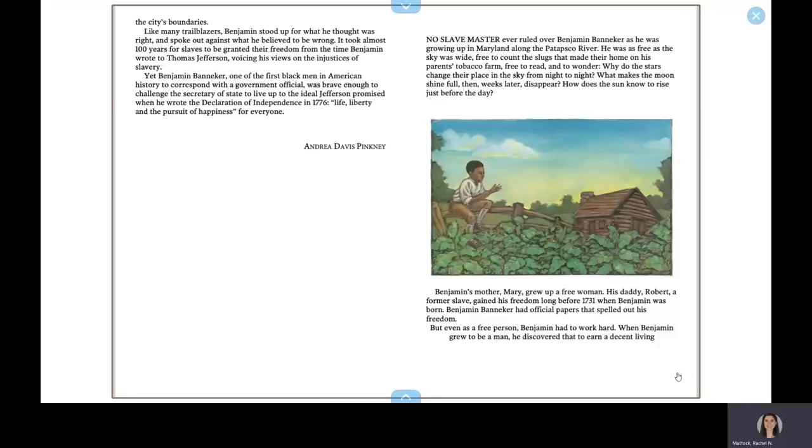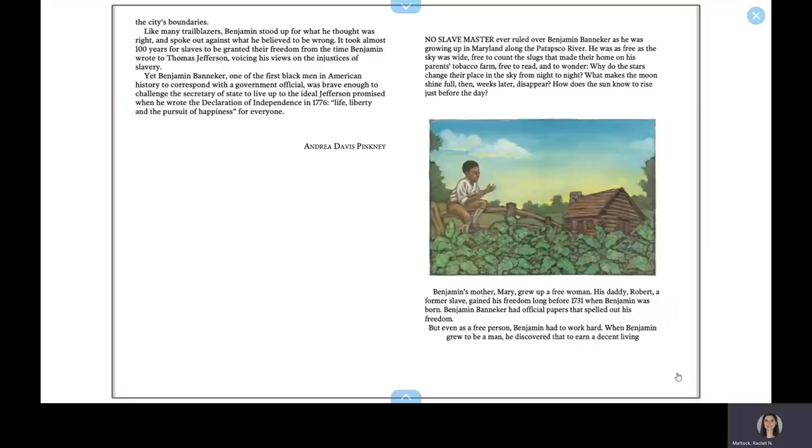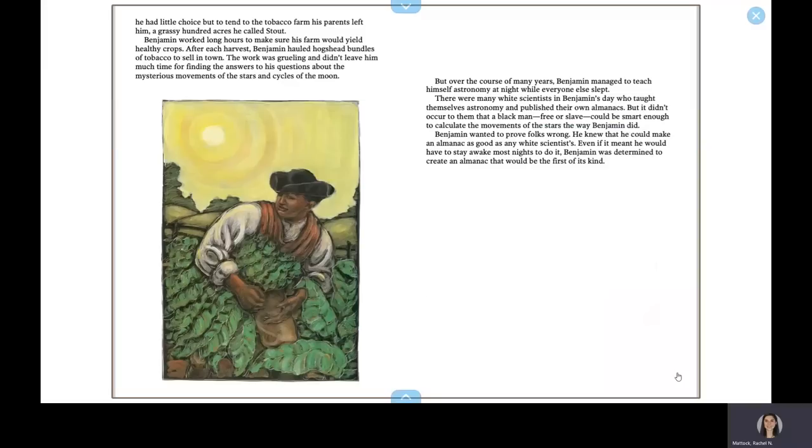Benjamin's mother Mary grew up a free woman. His daddy Robert, a former slave, gained his freedom long before 1731 when Benjamin was born. Benjamin Banneker had official papers that spelled out his freedom. But even as a free person, Benjamin had to work hard. When Benjamin grew to be a man, he discovered that to earn a decent living, he had little choice but to tend to the tobacco farm his parents left him.